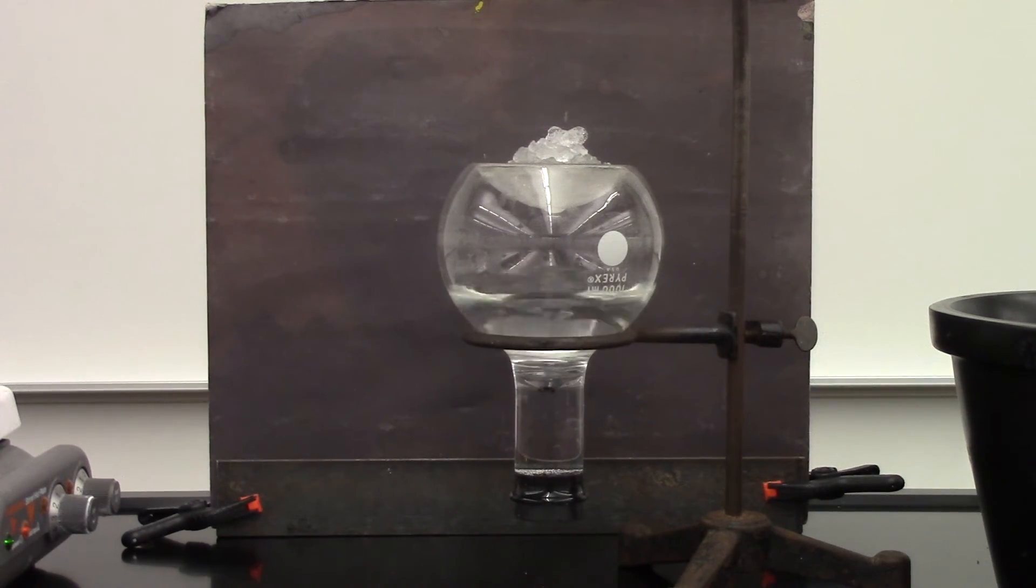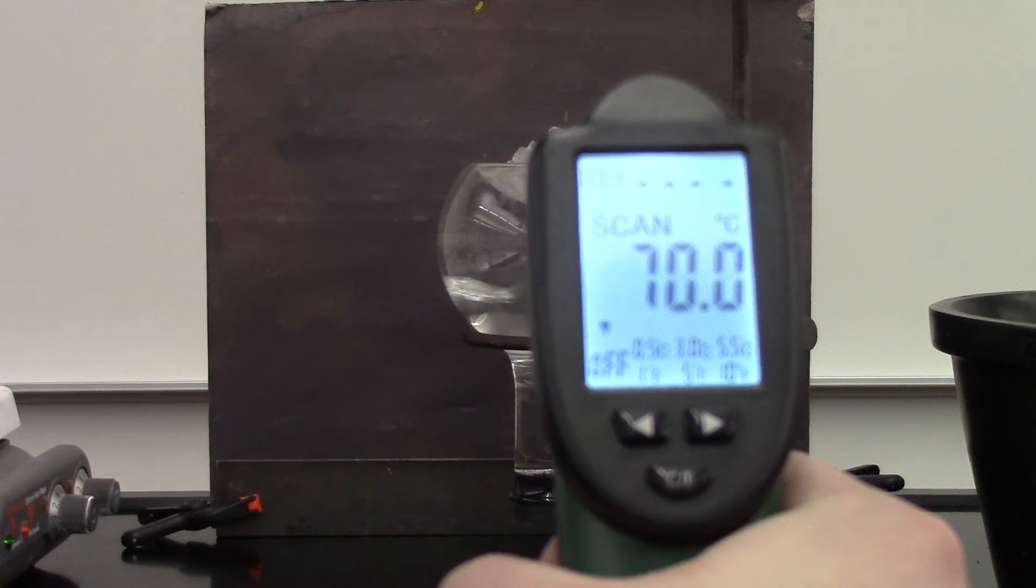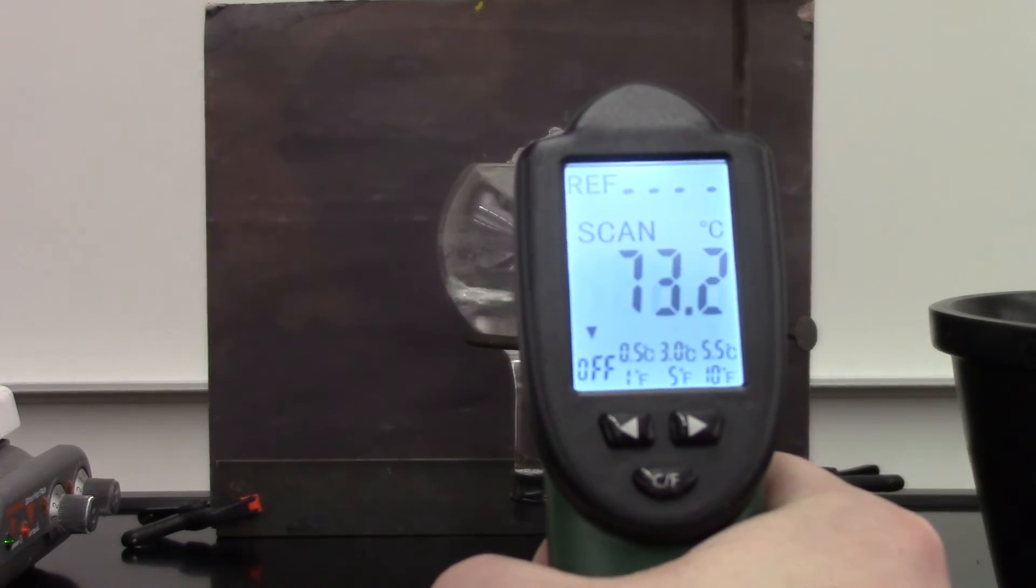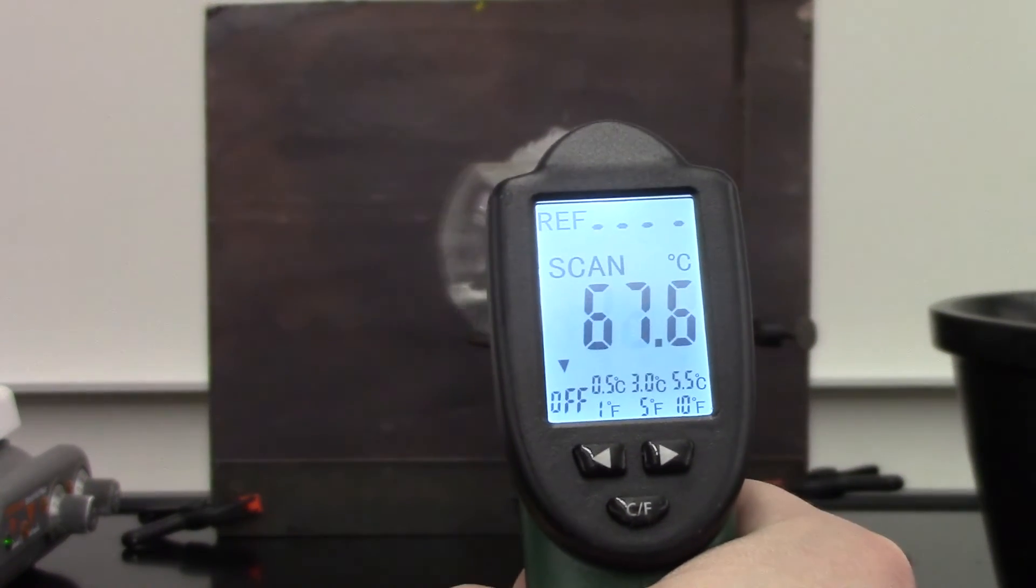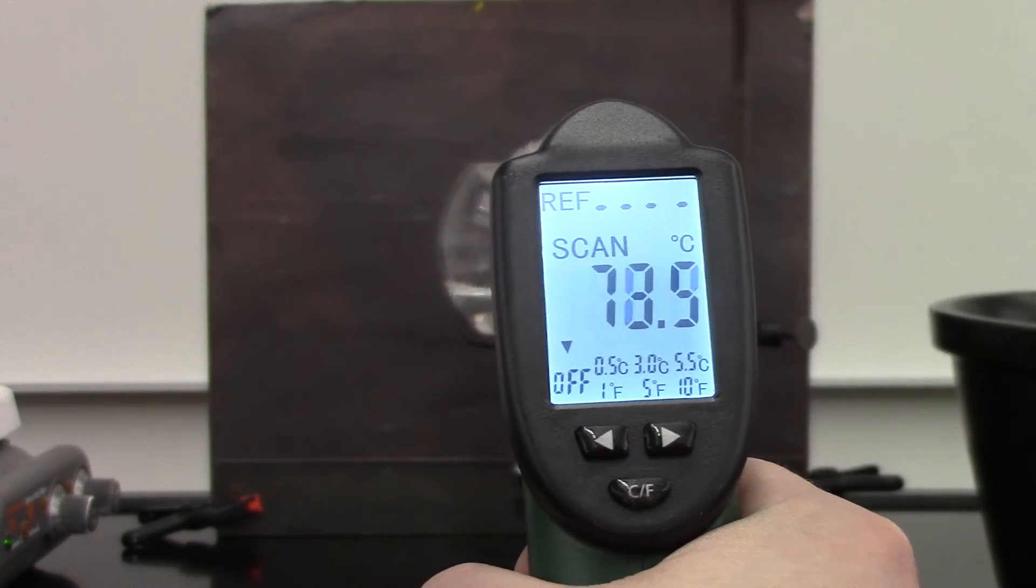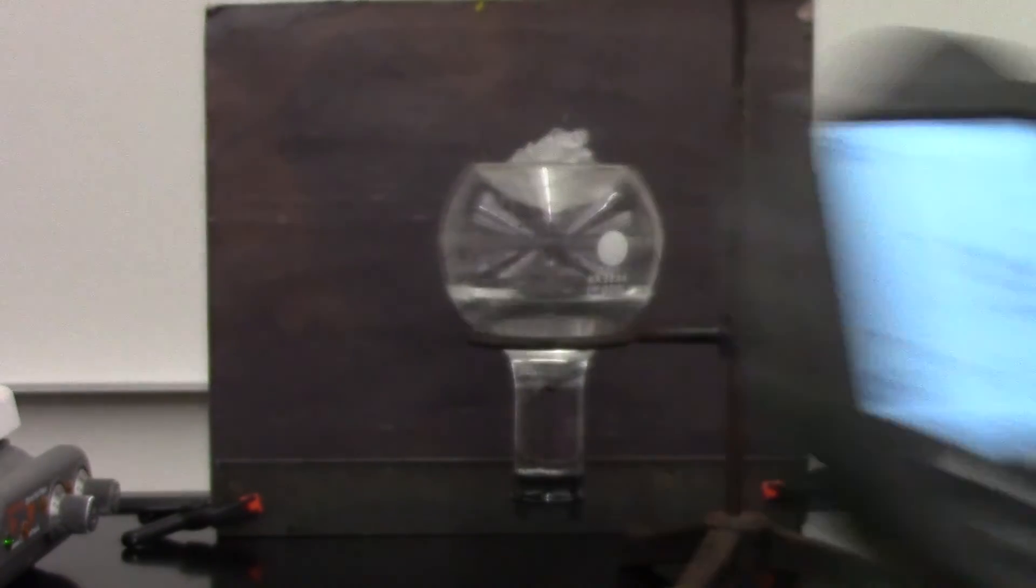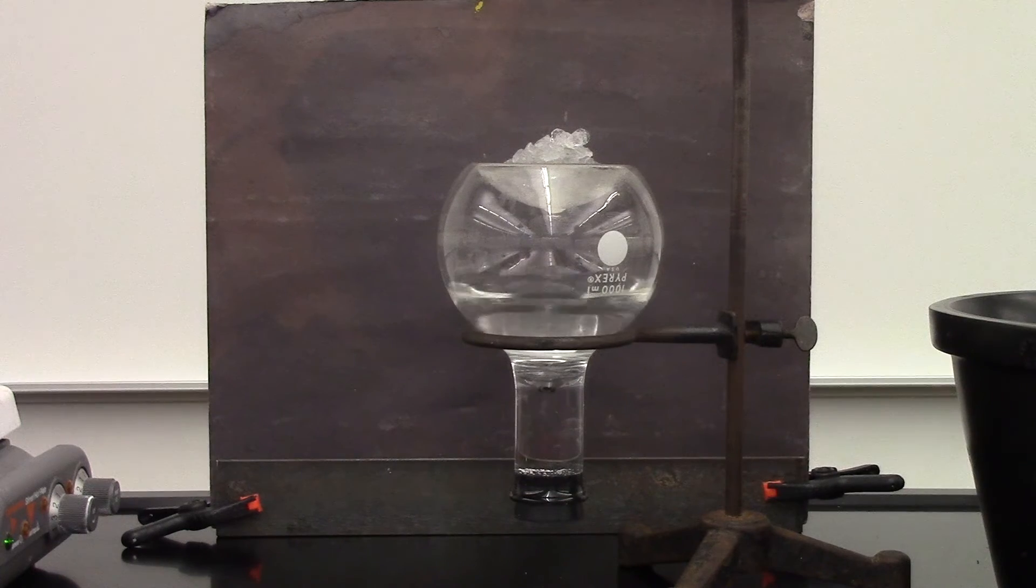As I add more ice, vapor continues to condense as the solution overall lowers in temperature. Due to the reduced pressure, we're able to see boiling at temperatures much lower than 100 degrees Celsius, similar to what we saw with the vacuum pump, but now in a closed system.